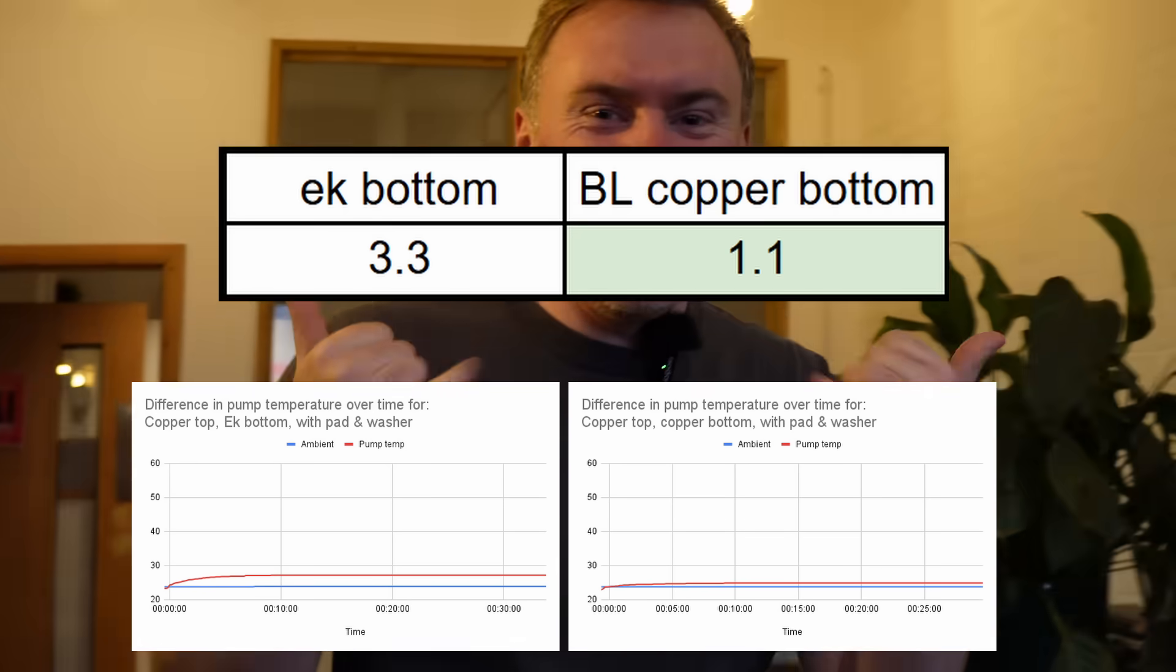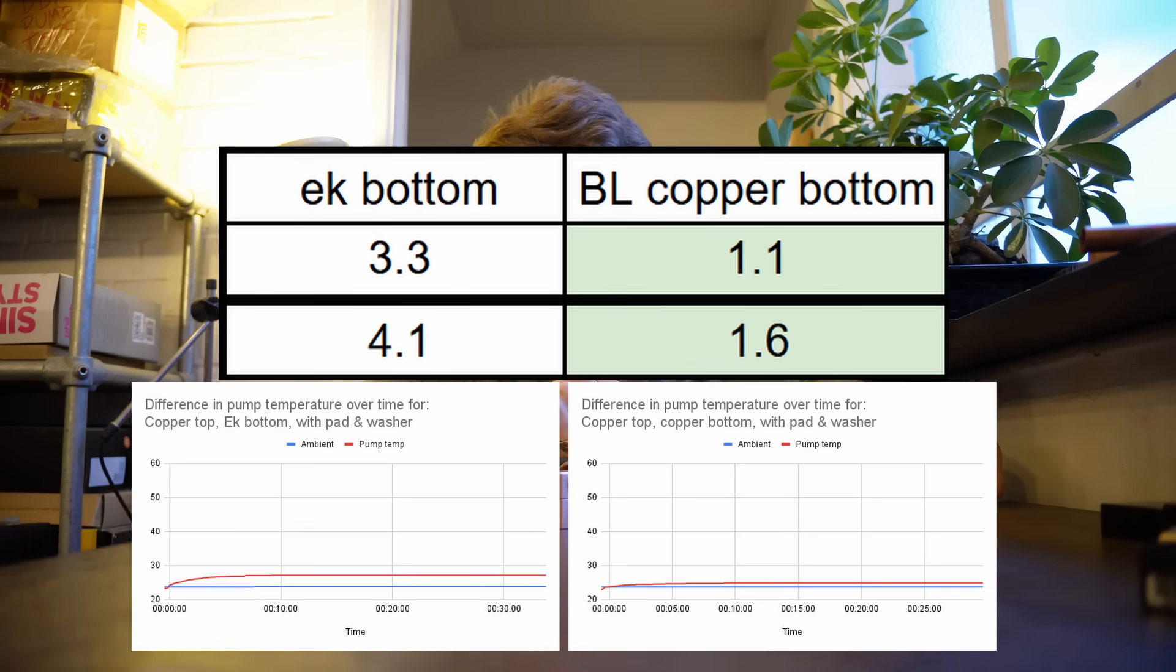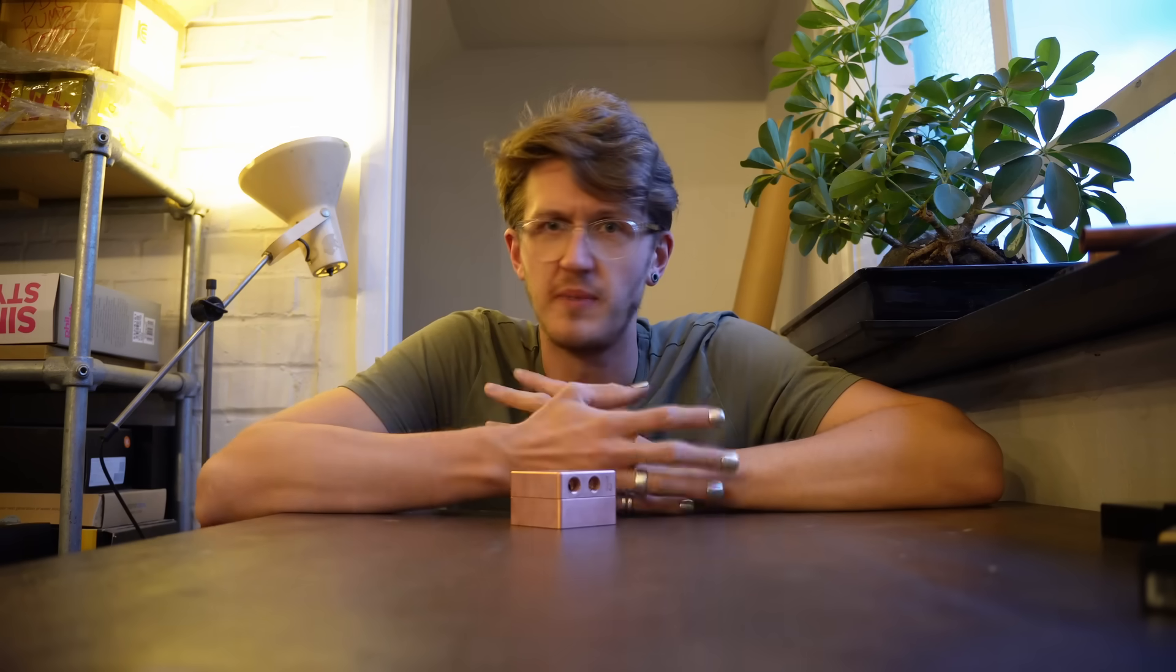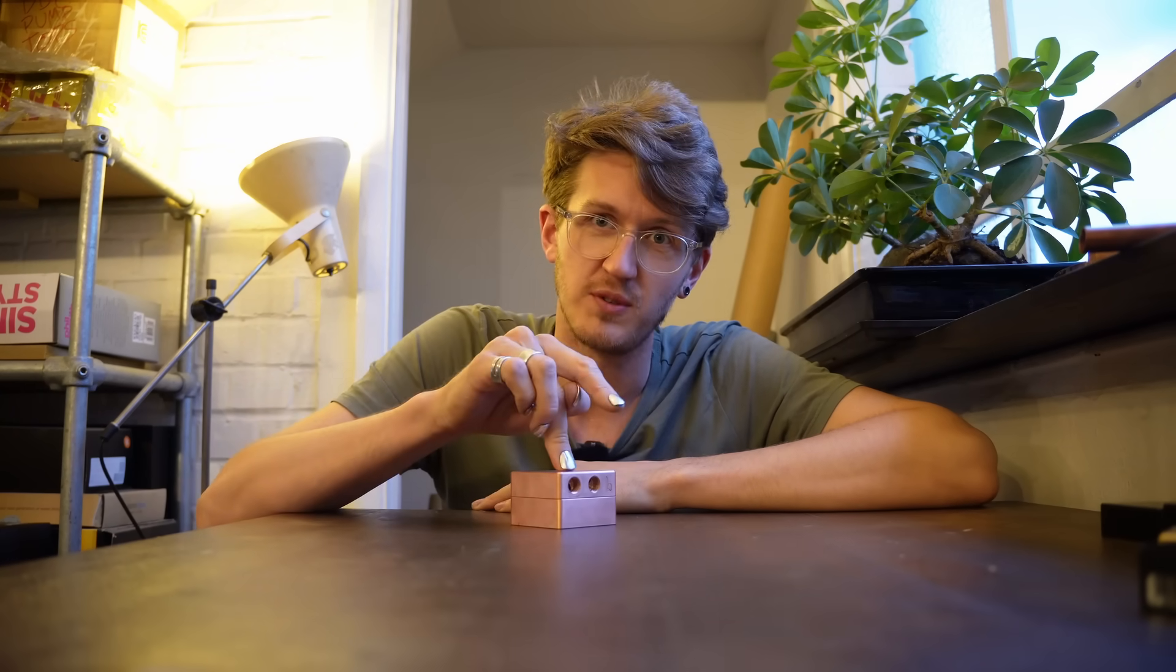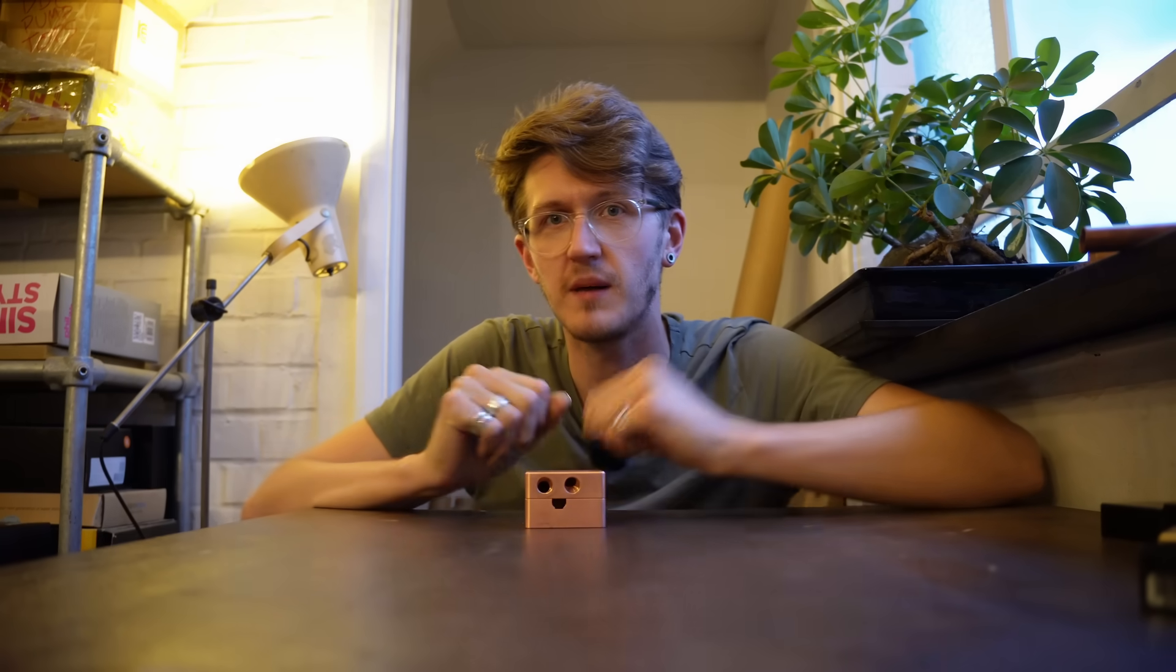After half an hour of testing, we peaked at 1.1 degree over ambient temperature. That's pretty awesome, we were very happy with that. A quick disclaimer though: the water temperature somehow was about half a degree colder than the ambient temperature, so technically we're 1.6 over water temperature, 1.1 over ambient. That's probably to do with our slightly incorrectly calibrated thermocouples, but we use the same thermocouples for both tests. So clearly a win for the water cooled DDC pump. The other good thing about it is that if you put it around this way, it makes a happy little face.